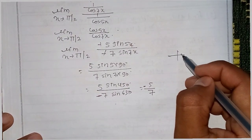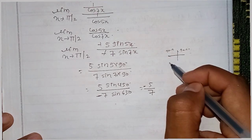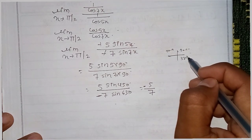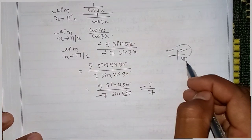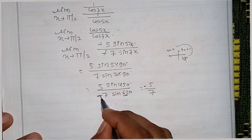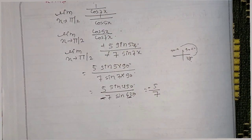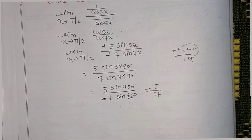So write this: 90 minus theta, 370 plus theta — so you can change the angles. If the situation is 60 degrees, you can already use these identities. That's the business — I will see you in the next video.